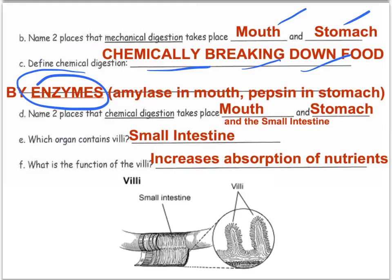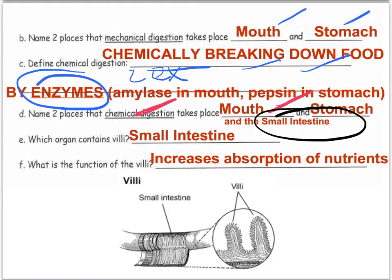Enzymes make things happen very quickly. Amylase is in your mouth and pepsin is in your stomach — very important, just write those in. Two places that chemical digestion takes place are the mouth and stomach; you can also add the small intestine as a side note. The small intestine contains villi, and the function of villi is to increase the absorption of nutrients, or increase surface area.